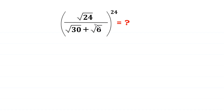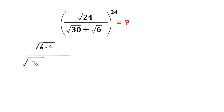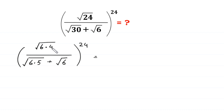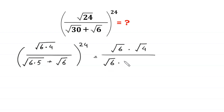Let's start by writing square root of 24 as square root of 6 times 4, divided by square root of 30 as square root of 6 times 5, plus square root of 6, whole to the power 24. Next, we write square root of 6 times 4 as square root of 6 times square root of 4, divided by square root of 6 times 5 as square root of 6 times square root of 5, plus square root of 6, whole to the power 24.